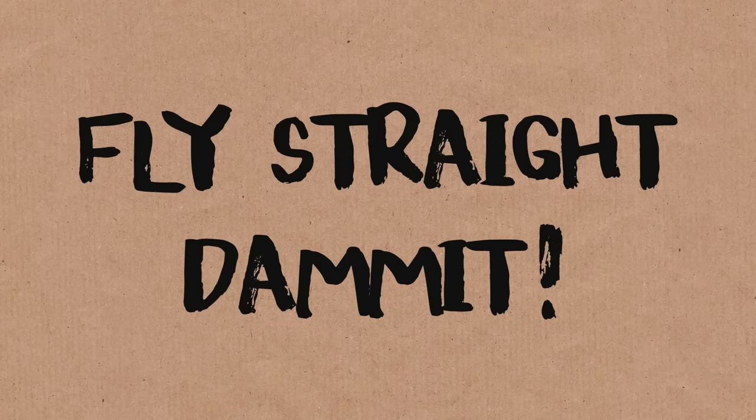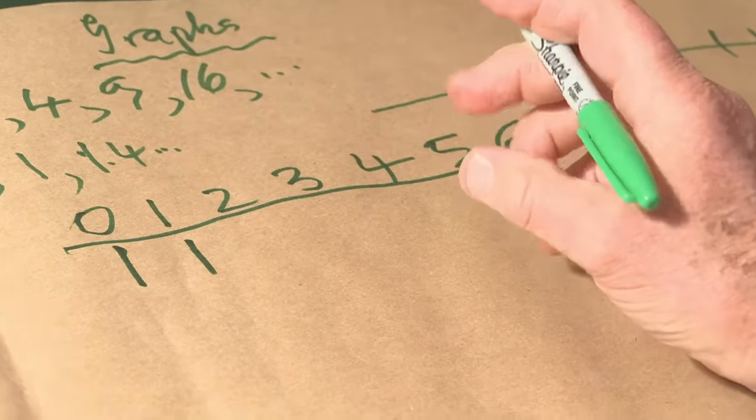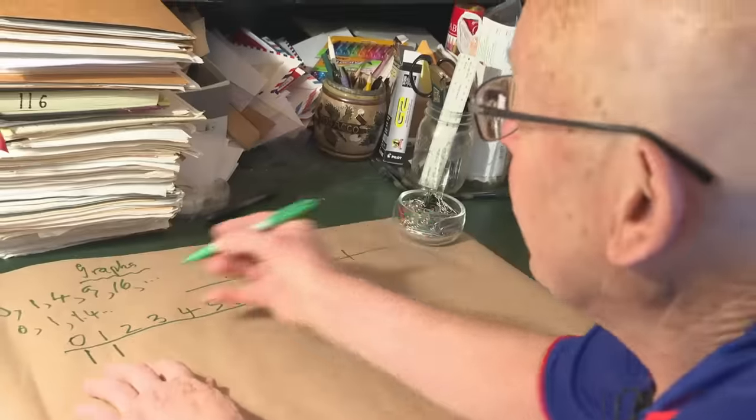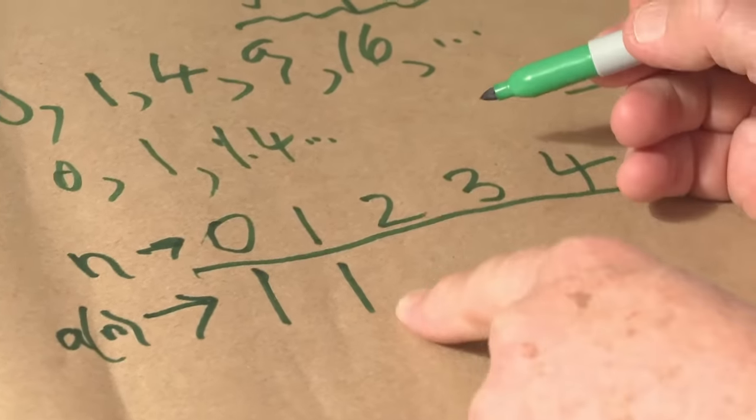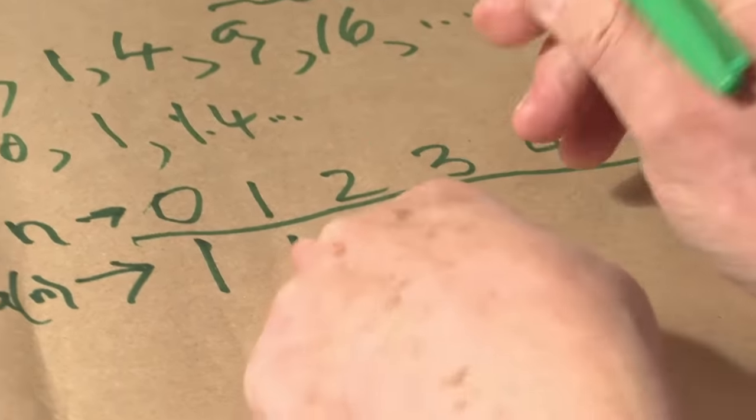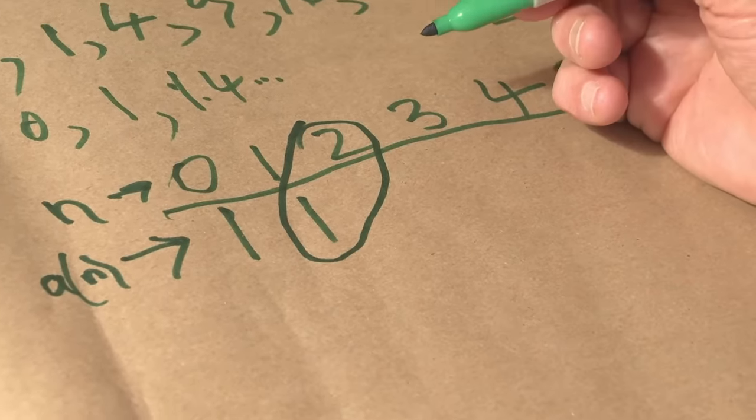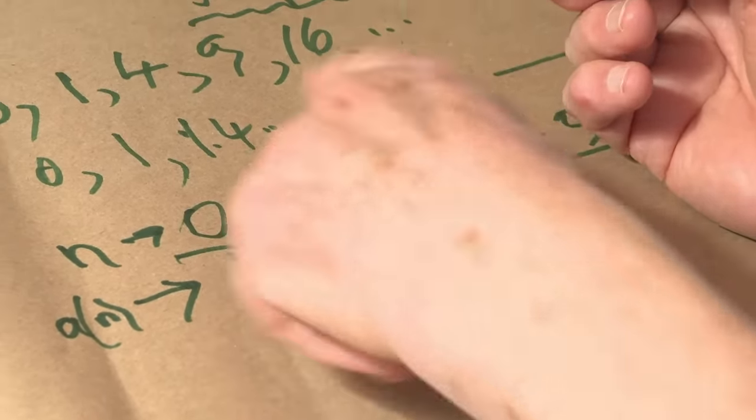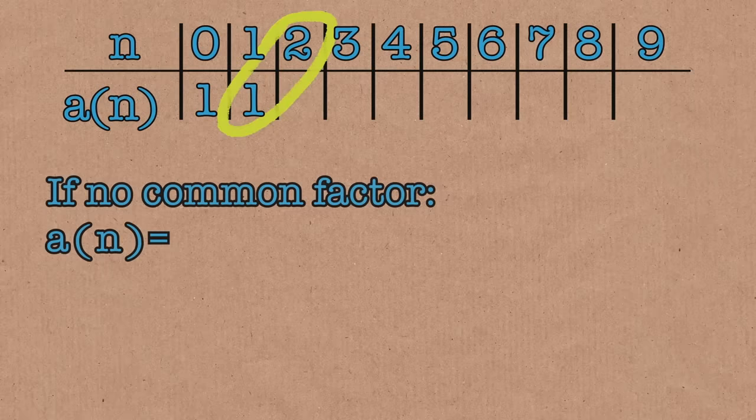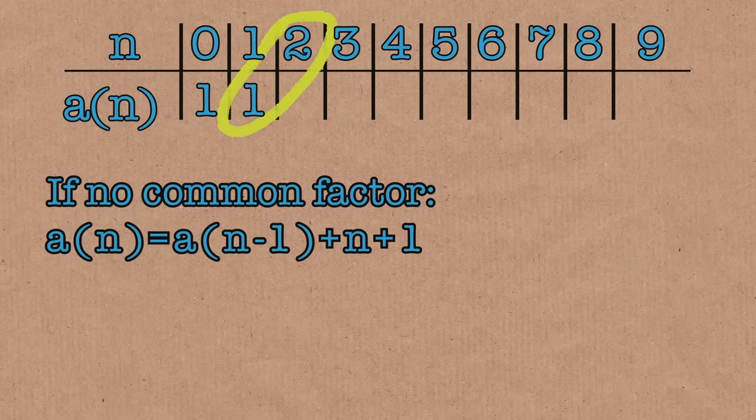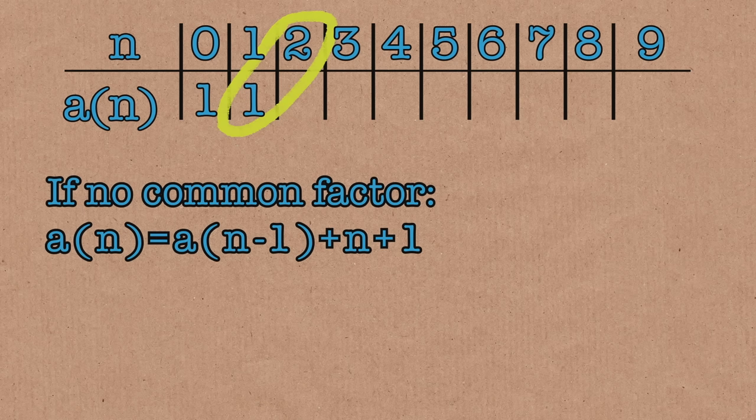I call this sequence fly straight, damn it. And the definition is this. We start off, the first two terms are 1. Okay, and now the rule kicks in. What is the rule? This is n and this is a of n. Now, what's the next term? You look at the last term and n and you compare them. Are they relatively prime? In this case, they are. They don't have a common factor. Then what it is, it's the previous term, a of n minus 1, plus n plus 1. So in this case, there's no common factor. So the next term would be 1 plus 2 plus 1, which is 4.